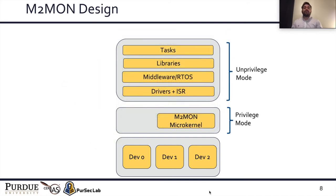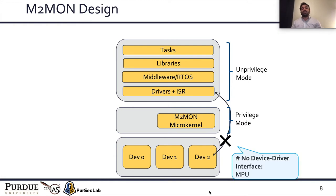Instead, for M2Mon, we push everything from the privileged mode into the unprivileged mode, leaving the privileged mode as a safe haven for the M2Mon microkernel. In this design, we can use the memory protection unit to restrict access to IO from the unprivileged mode. A memory protection unit is just like a memory management unit; however, it does not provide any address translation. This design should work, but there is an architectural quirk we need to talk about — interrupt handling.